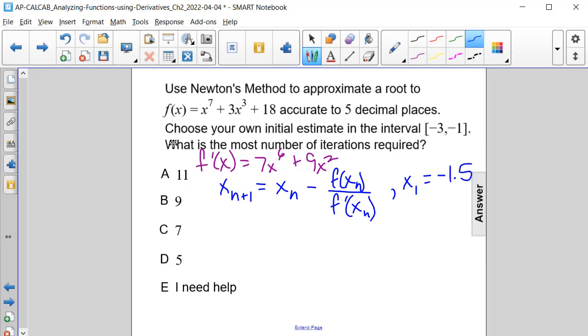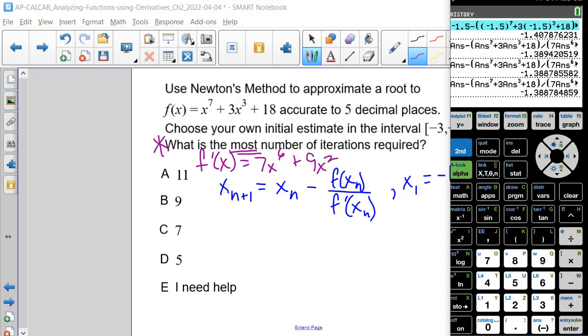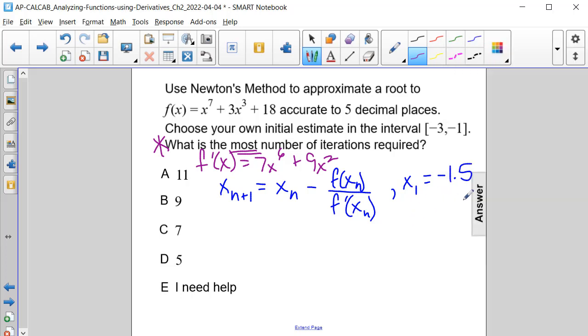We went through 4 of these. But this question is asking for what's the most number of iterations. The most number. If it was looking for the least, we would have our answer. But because it's looking for the most, let's actually try this process again. But instead of using the graph to give us our first value, let's use one of our endpoints. Let's try using negative 3.